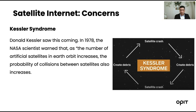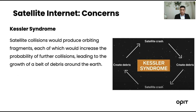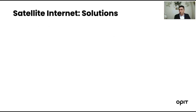Back in the 1970s, a scientist named Donald Kessler predicted that the number of artificial satellites in Earth's orbit would increase, and so would the probability of collisions between satellites. Accumulating space debris could lead to a catastrophic scenario that makes portions of Earth's orbit inaccessible. Collisions lead to more collisions, resulting in the growth of a belt of debris around the Earth.